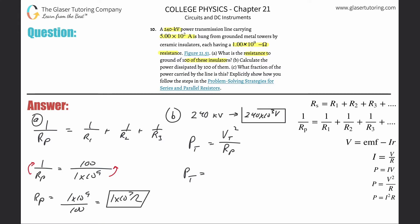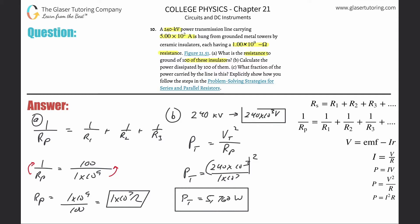Plugging it in: 240 times 10 to the 3rd, squared, divided by 1 times 10 to the 7th. Don't forget to square it. So we get 240 times 10 to the 3rd squared, divided by 1 times 10 to the 7th, which gives about 5,760 watts of power. That's the total amount of power dissipated, which takes care of letter B.